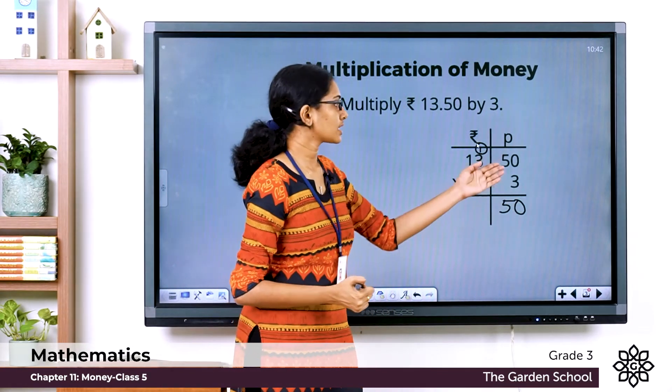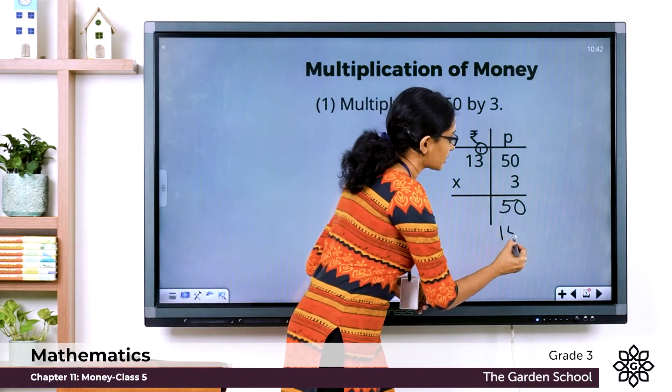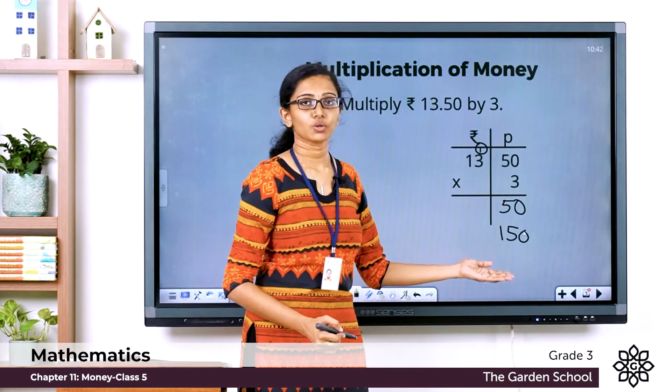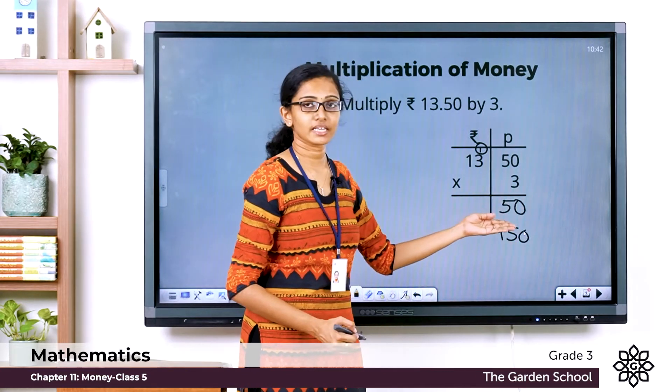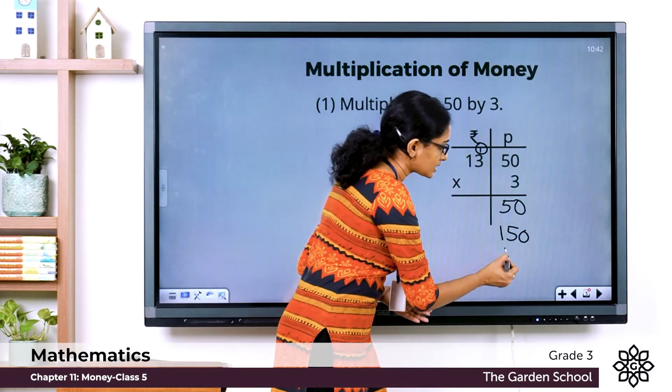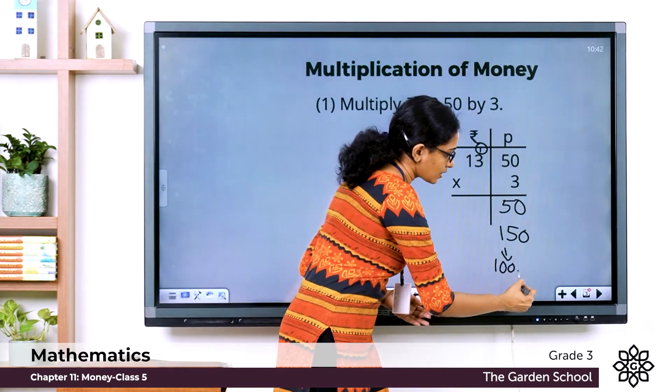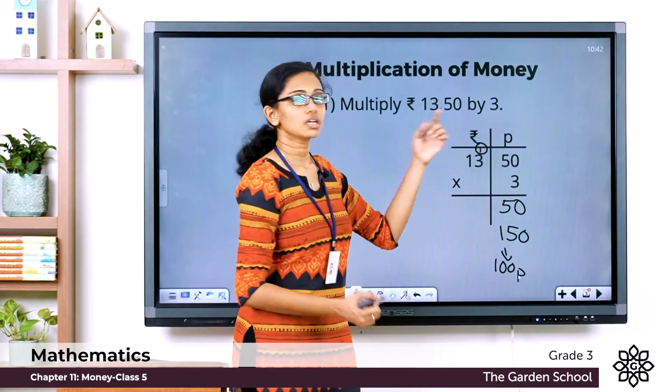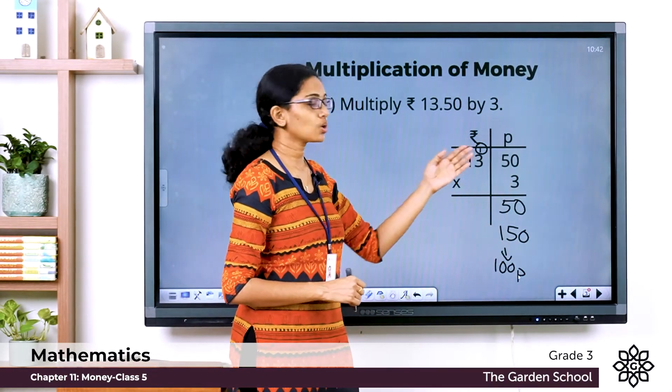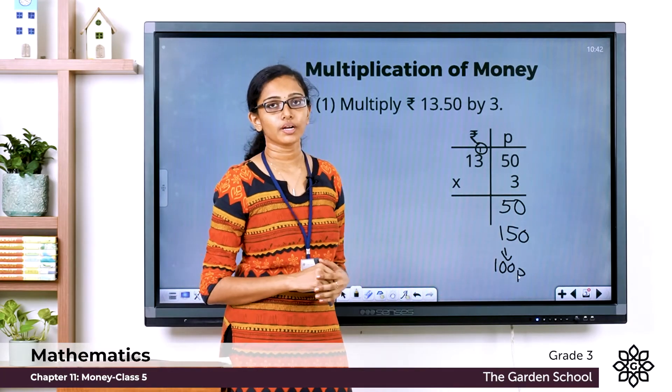Why? Because here it becomes a total of 150 paisae and we wrote that 50 paisae in the paisae column and carried over the 100 paisae from this to the rupee column. So 100 paisae when carried over to the rupee column it becomes 1 rupee.